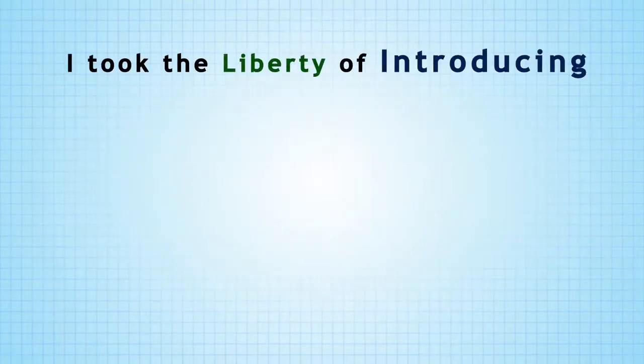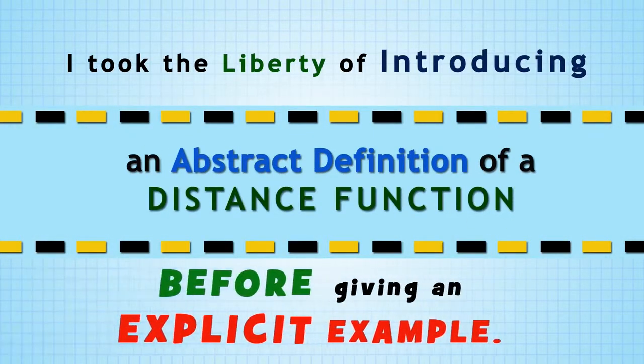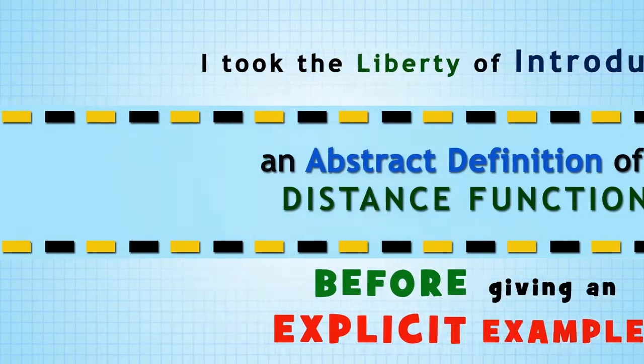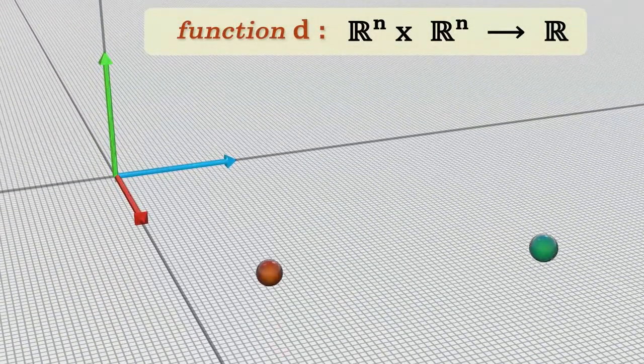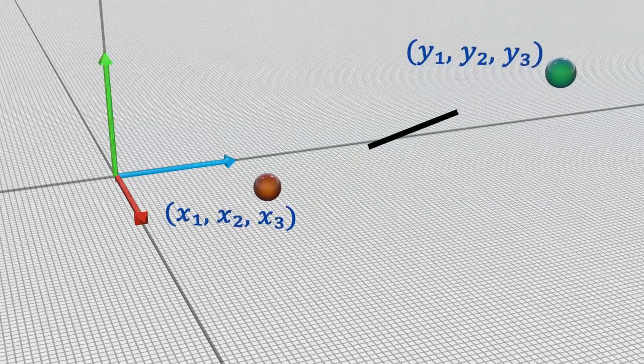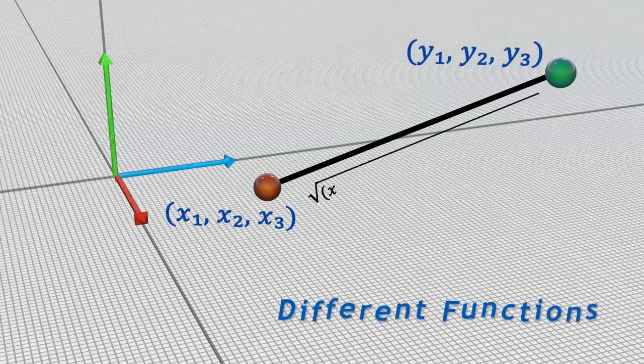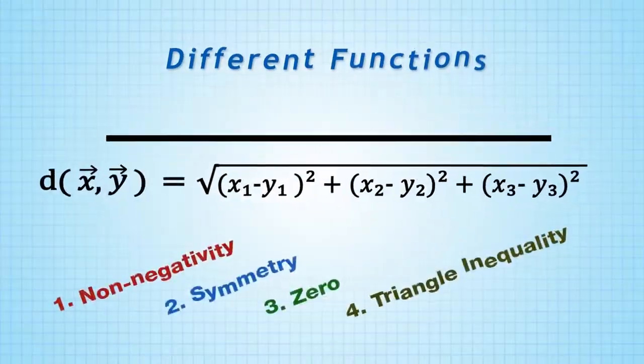I took the liberty of introducing an abstract definition of a distance function before giving an explicit example. The reason is that we can have different functions, d, that satisfy the properties of a distance function.